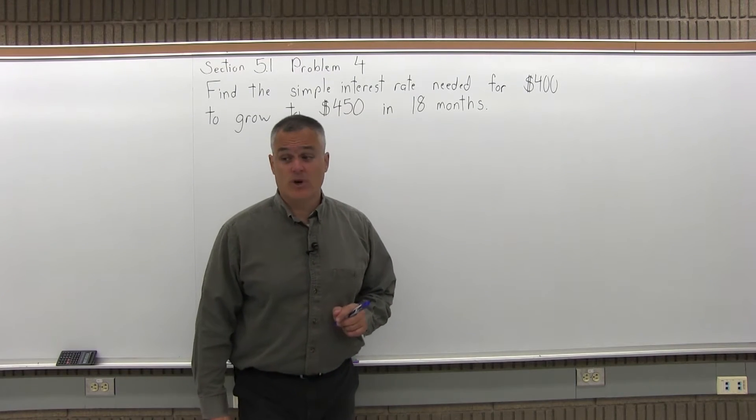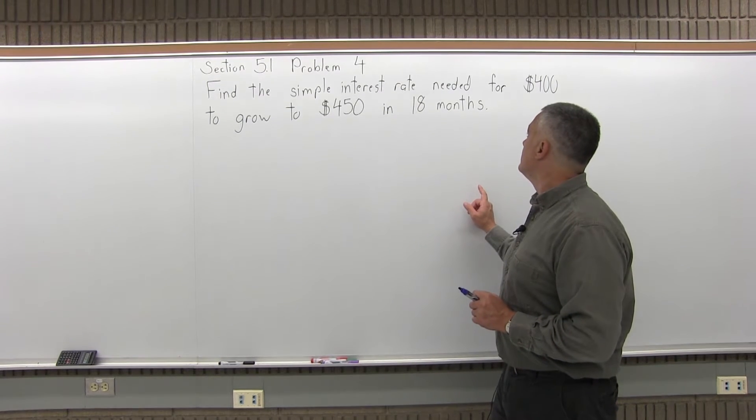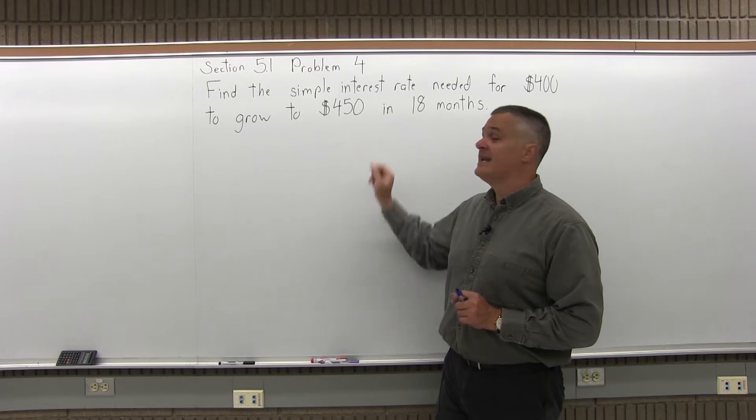This is Section 5.1, Problem 4. It says, find the simple interest rate needed for $400 to grow to $450 in 18 months.